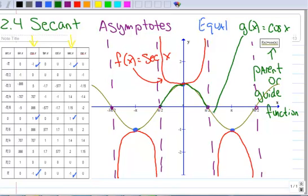And then you might also write g of x equals cosine of x, and indicate what that function is. So you can see how you use your cosine function here, as a guide function for your secant.